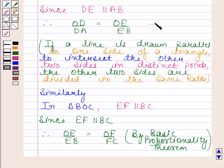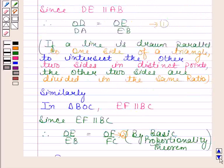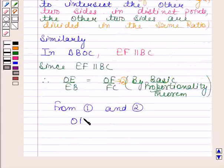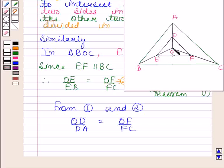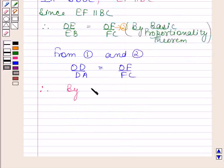Now let us name this as 1 and this as 2. From 1 and 2 we get OD by DA equals to OF by FC. And as OD by DA is equal to OF by FC, therefore by converse of Basic Proportionality Theorem,